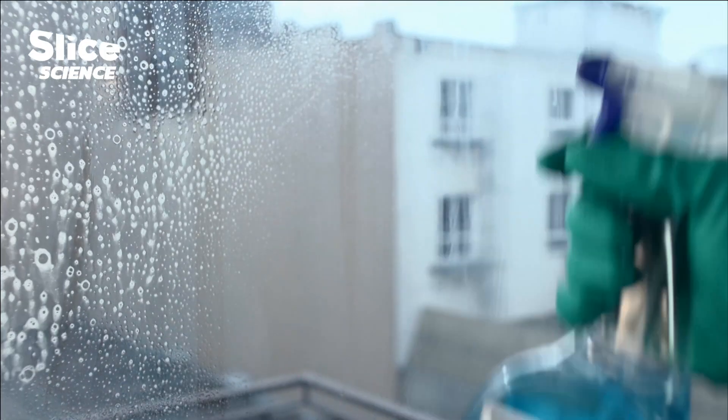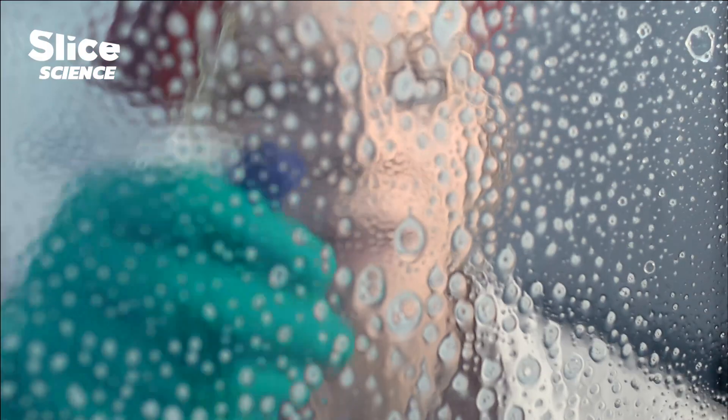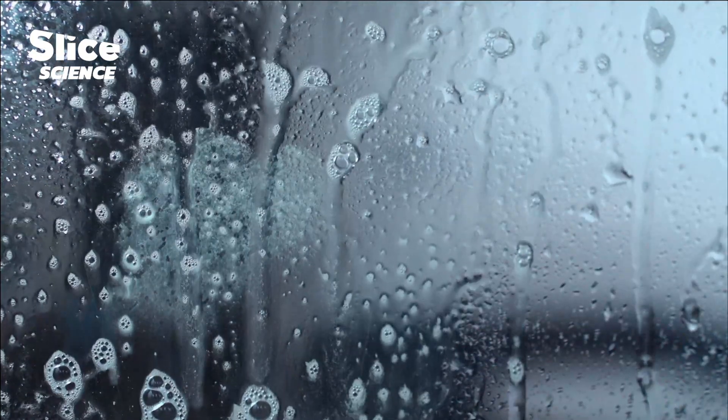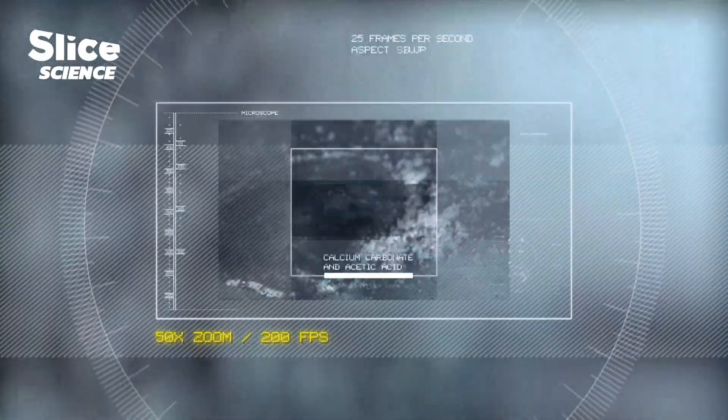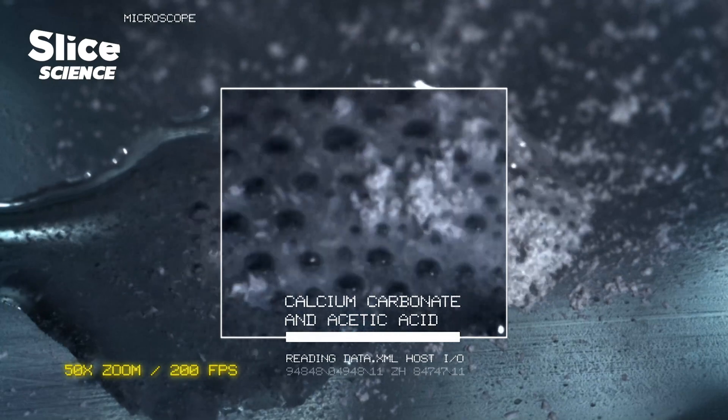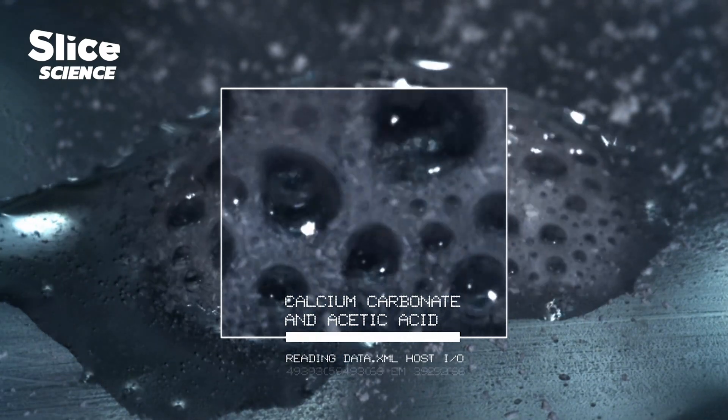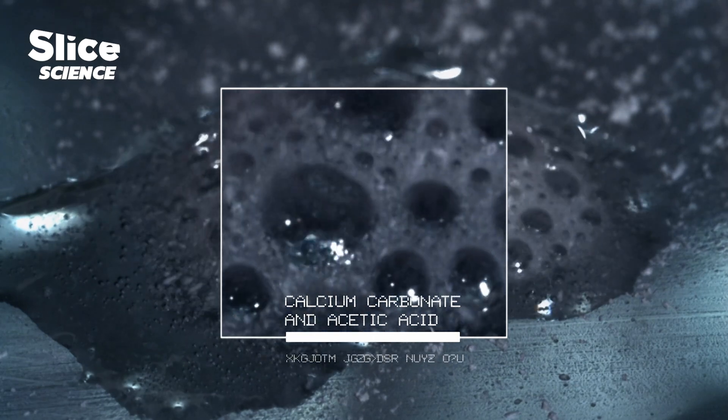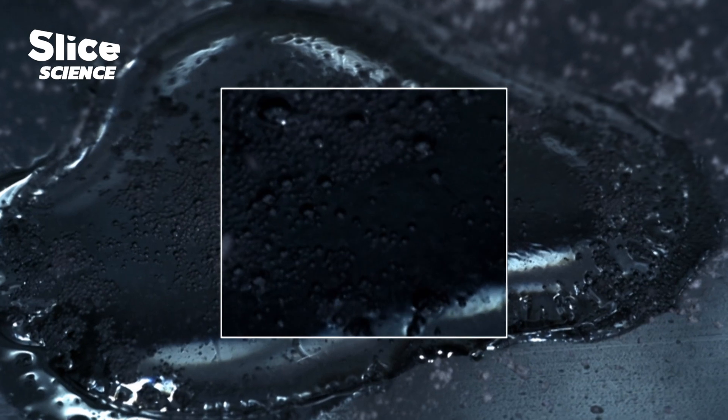But what about lime scale? An old recipe suggests using a cold vinegar water mixture to follow the cleaning phase. Lime scale consists of calcium and carbonic acid. Acetic acid or vinegar is stronger than carbonic acid, so it can penetrate the lime scale. A high-speed camera running at 200 frames a second reveals the processes at work.